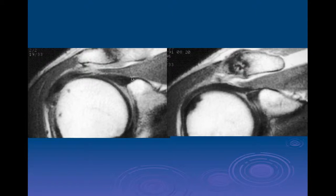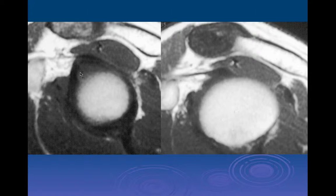Here's the superior part of the glenoid. This is the superior labrum and this is the biceps anchor, and on this T1-weighted image we really can't see a separation between the two on one slice. Going a little more anteriorly, we can start seeing a little separation plane with partial voluming of the biceps tendon. In the oblique sagittal plane, the normal shape of the glenoid fossa is oval, yet there's a little hat on top — that's the location of the biceps anchor.